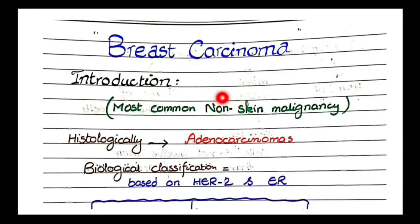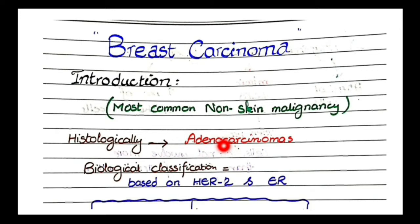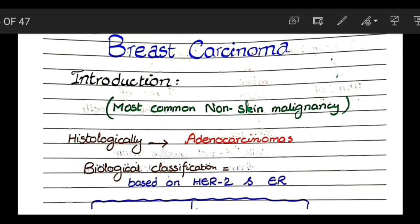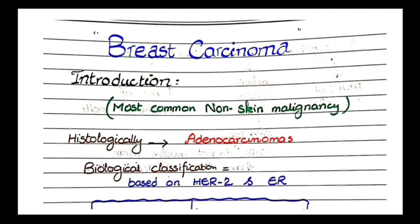Breast carcinoma is the most common non-skin malignancy. Most common cancers are skin cancers, but as skin cancers are not very deadly, we categorize non-skin malignancies as the important ones — and out of these, breast carcinomas are the most common. Histologically, breast carcinomas are adenocarcinomas; the word 'adeno' means glands, and most breast carcinomas have at least some degree of glandular differentiation.